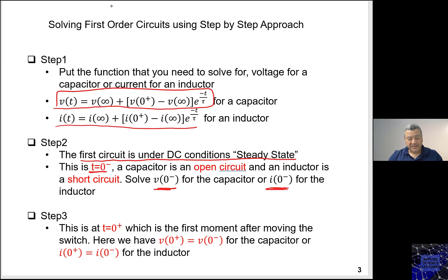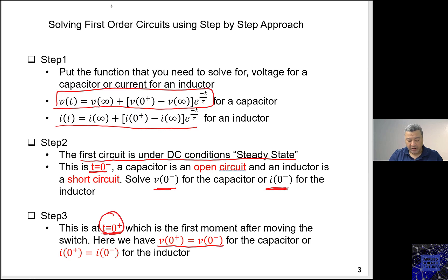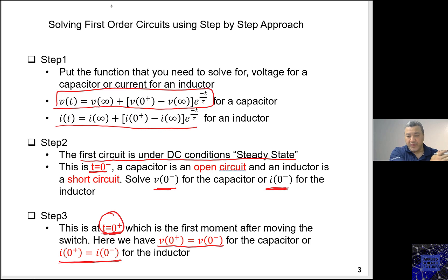Step number three is at zero plus — the switching has happened and you get a new circuit. For the capacitor, the voltage at zero minus equals the voltage at zero plus. For the inductor, the current is continuous, so I zero plus equals I zero minus. So whatever you found at zero minus is the same as zero plus.